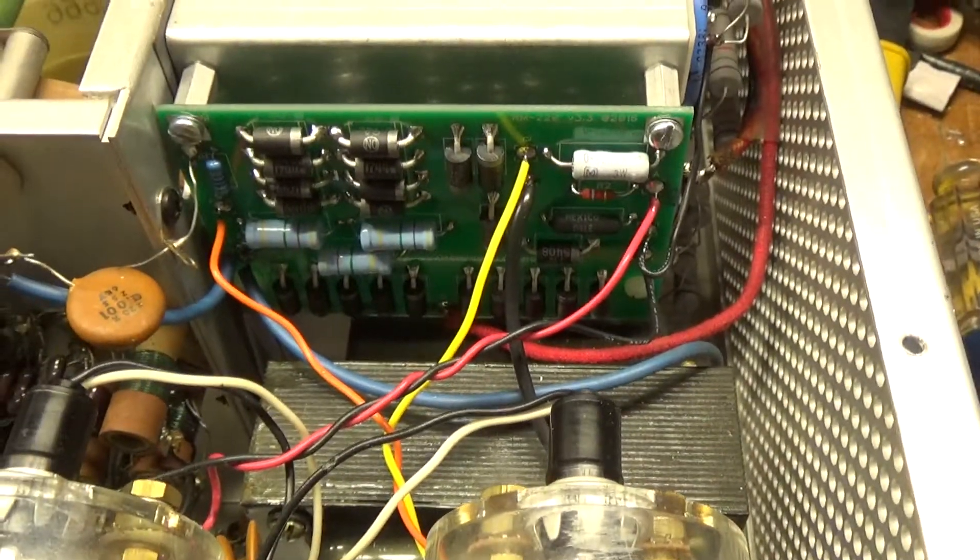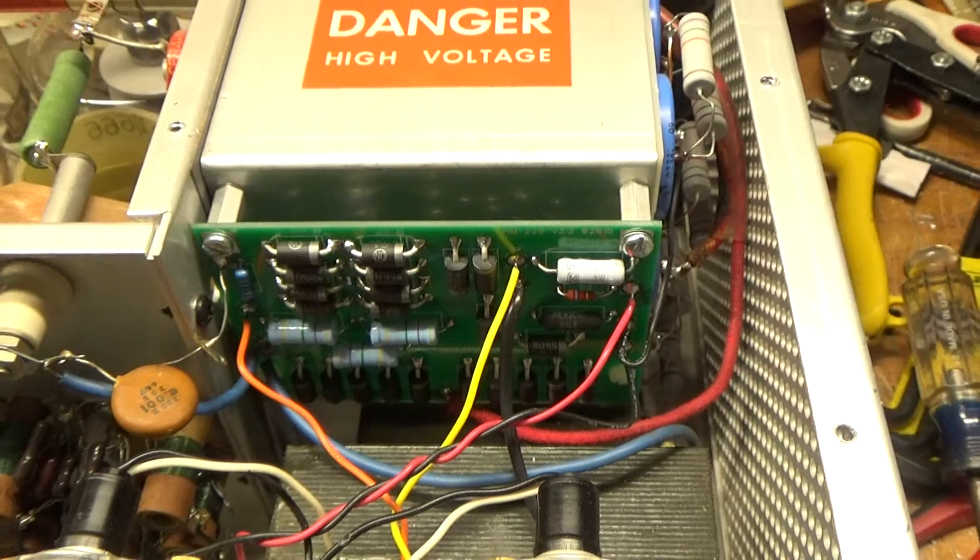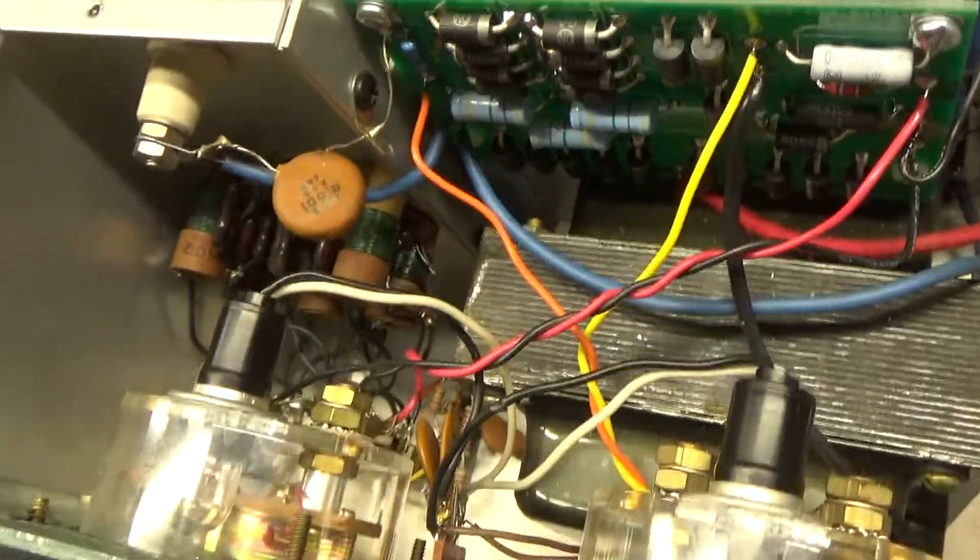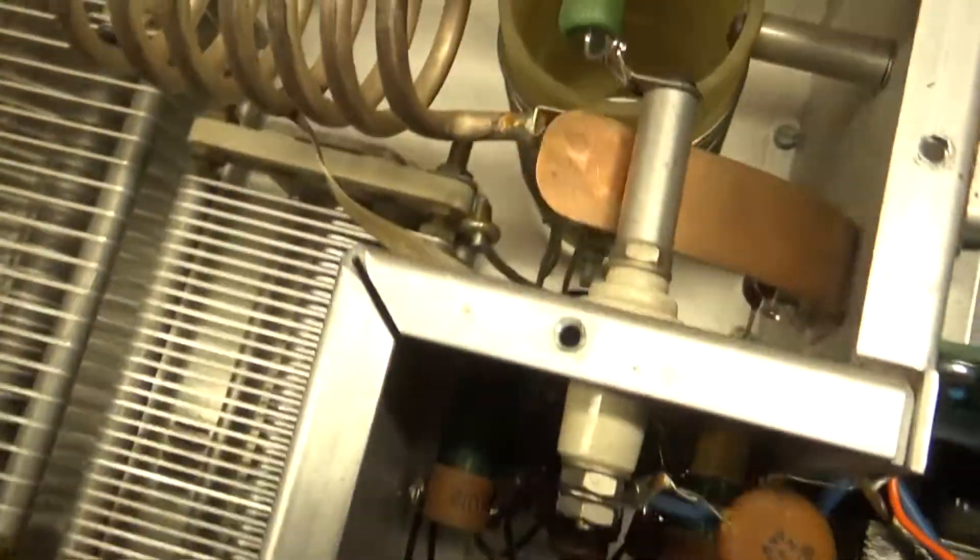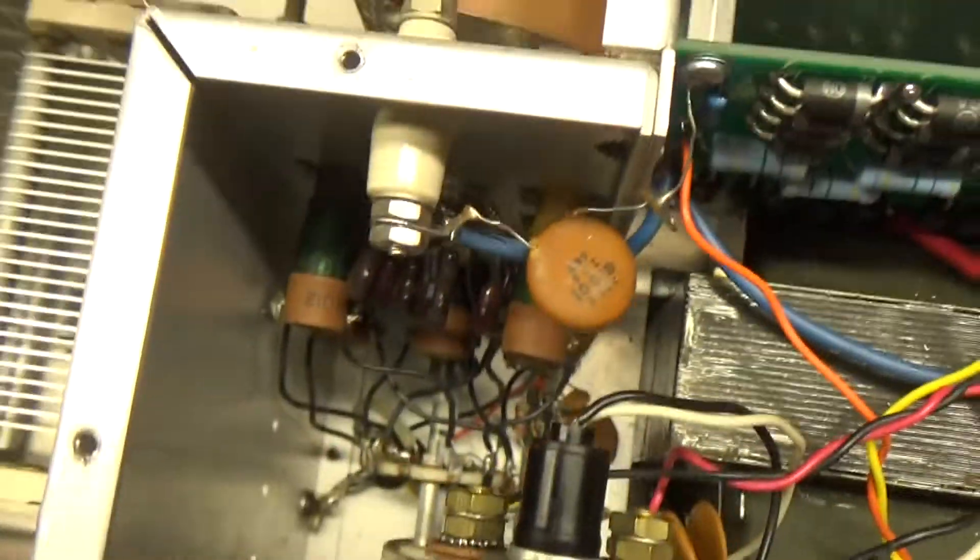That was a new beautiful Harbach metering board. Replaced the meter lamp bulbs. Cleaned the output rotary switch, cleaned the input rotary switch.